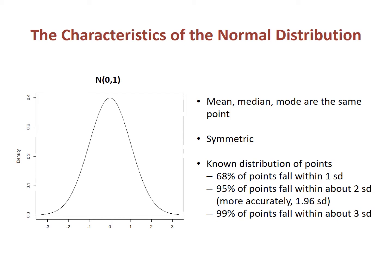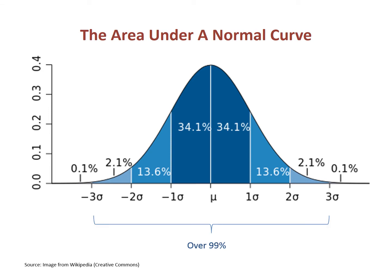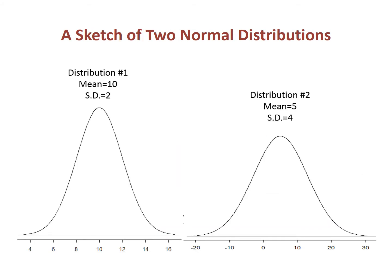The mean and the standard deviation tell us a lot about the curve. About 68 percent of points fall within one standard deviation of the mean. About 95 percent of points fall within two standard deviations of the mean. Over 99 percent of points fall within three standard deviations of the mean. Thus, if we assume a distribution is normally distributed, the mean and standard deviation together give us enough information to make a sketch of the distribution.